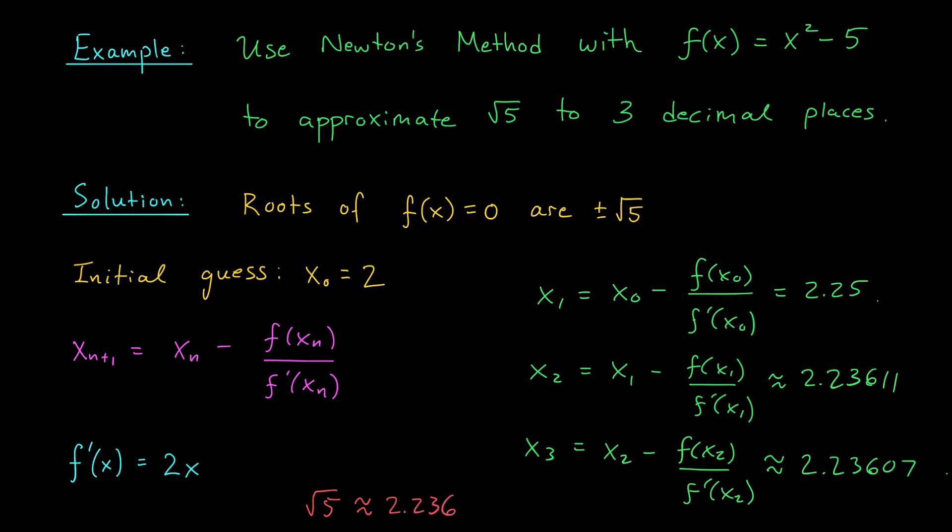Now this is the solution to our problem. But just as a little side note, I've truncated the value of x3 here. If you expand this up to 9 decimal places, you'll see it agrees in all of those decimal places with the true value of root 5, which is pretty incredible. Newton's method has converged to 9 correct decimal places in just 3 steps.